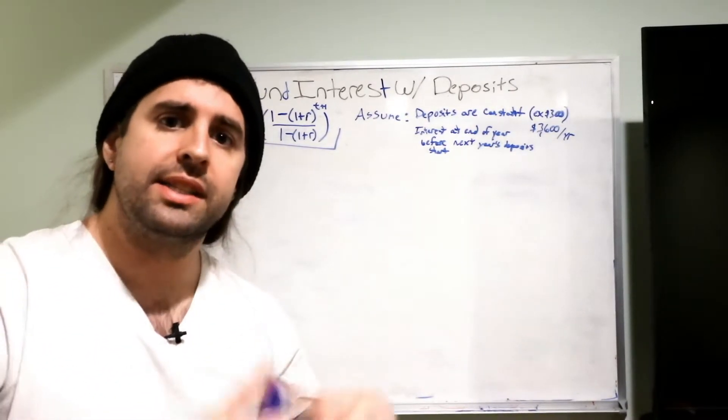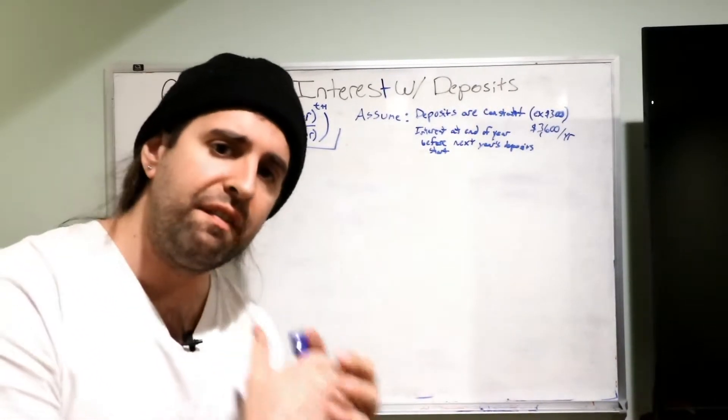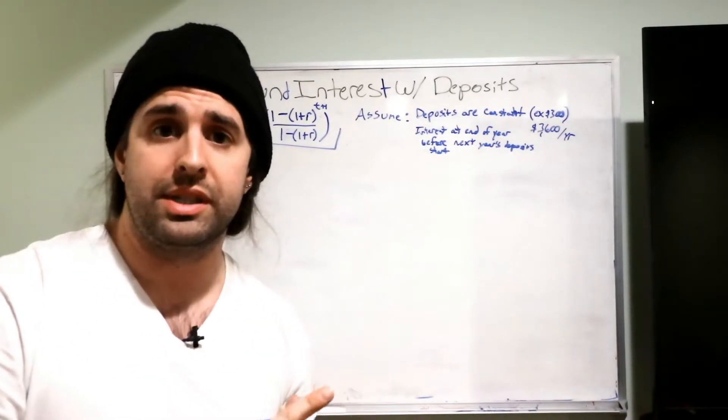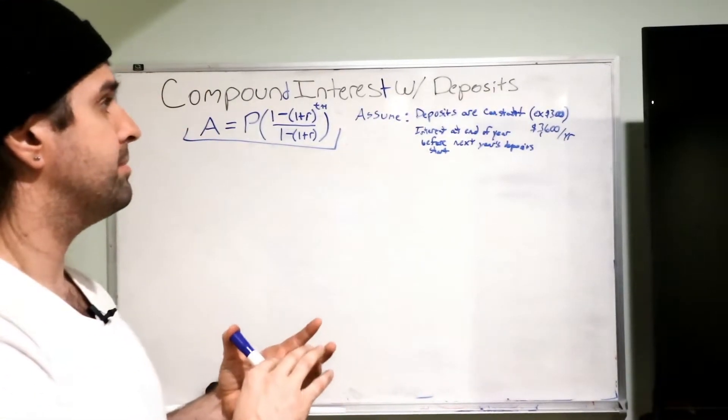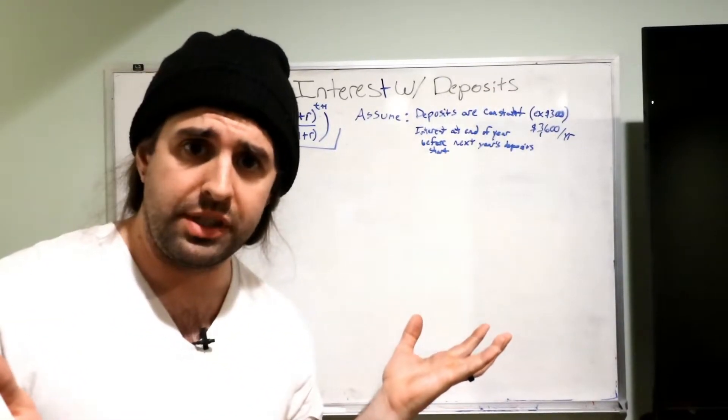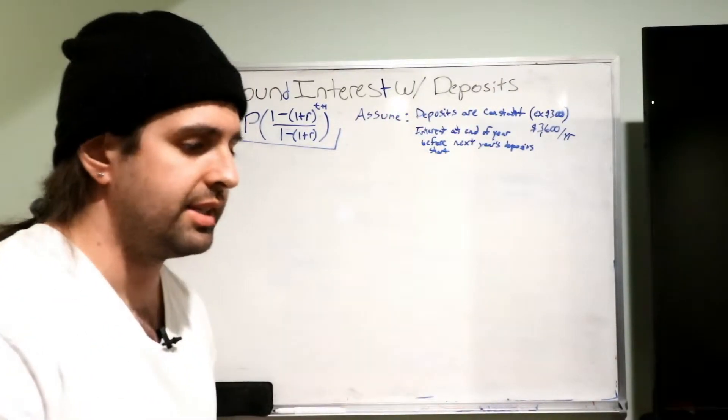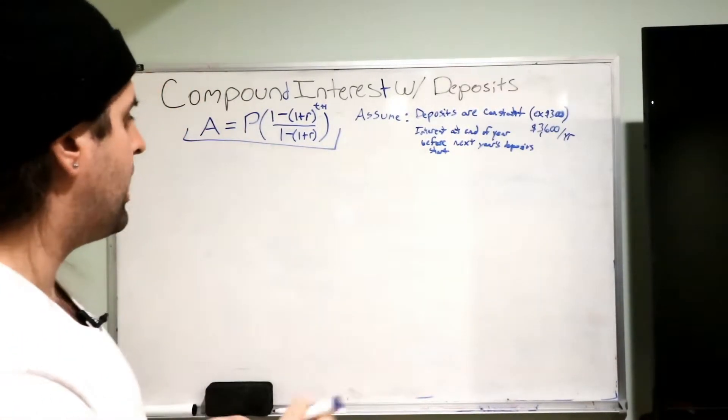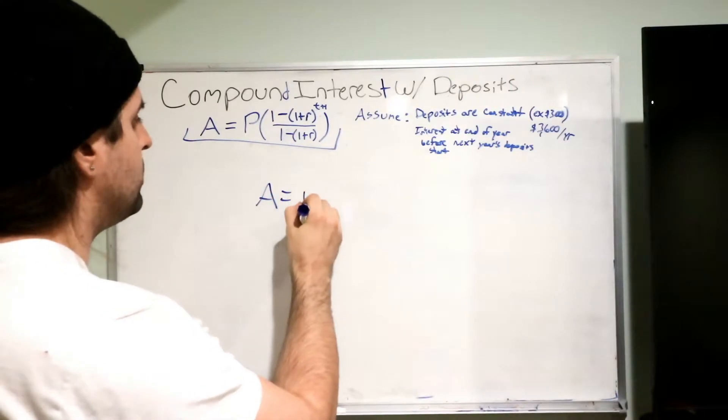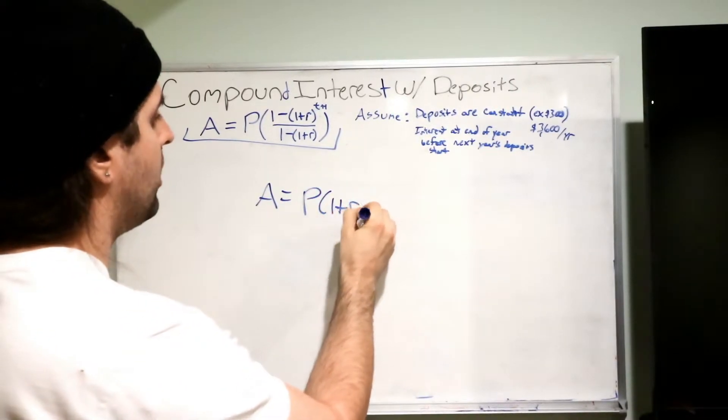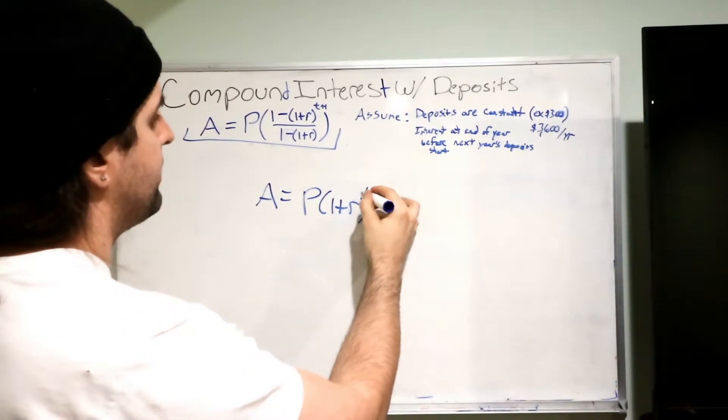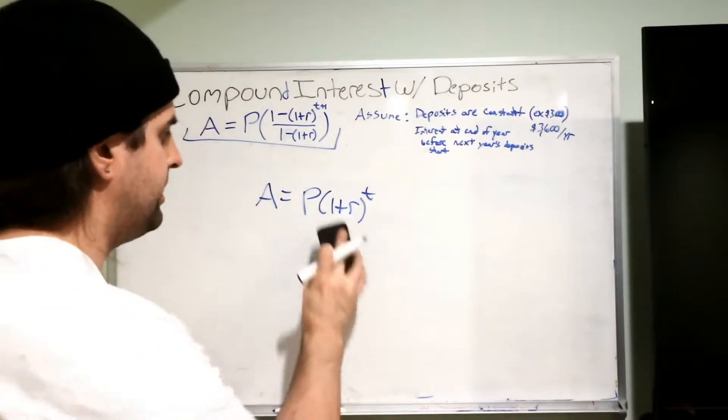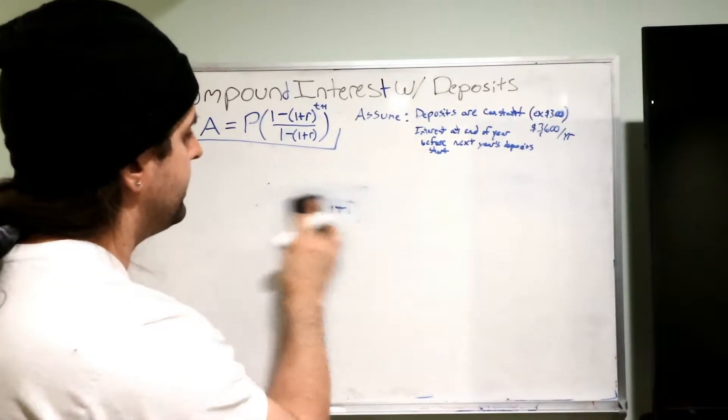Alright, in this video it's a part of the series Math of Finance and specifically the compound interest video portions. Okay, so compound interest with deposits. I previously did a video on just compound interest and how we derive the formula A equals P times 1 plus R to the amount of time T. Alright, and I'll link that video up in the corner and in the description.